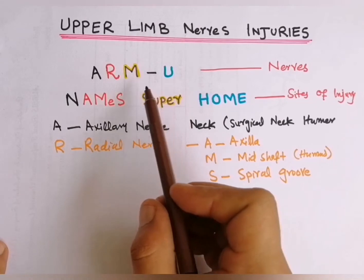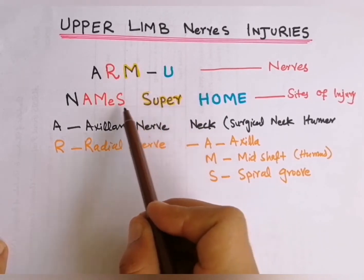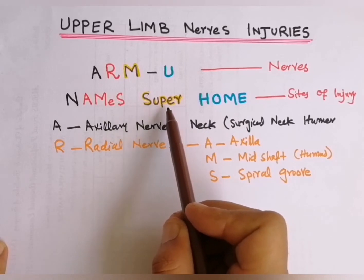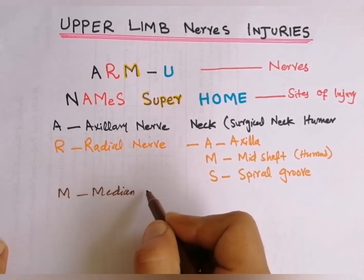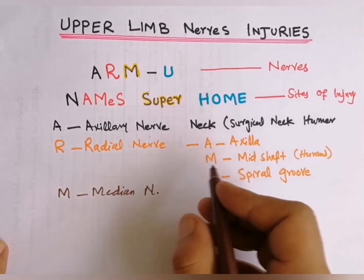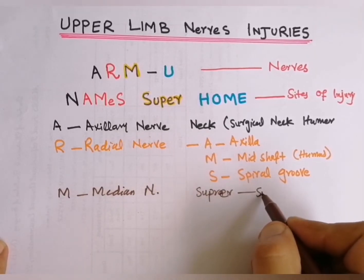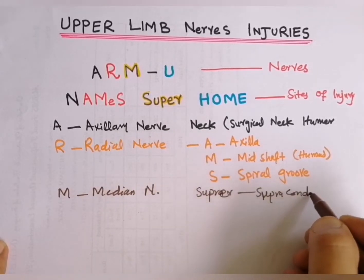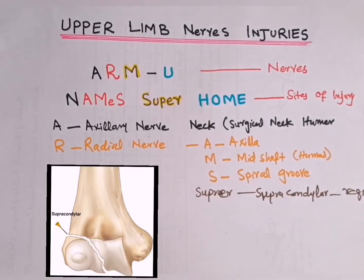M in RMU is for median nerve, which is commonly damaged in SUPER of the mnemonic SUPER HOME, where SUPER represents the supracondylar region. In this diagram, I am representing the exact site of damage at the supracondylar region, which in turn causes palsy of the median nerve.